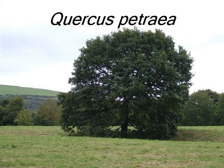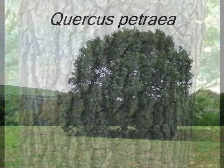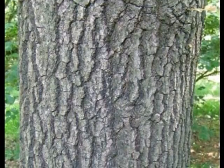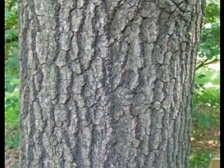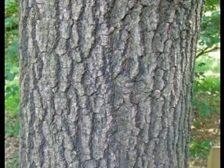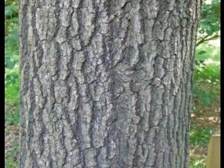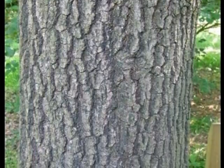To identify Quercus petraea, it's good to look for the following features. A fissured grey to brown bark, breaking into thick plates.